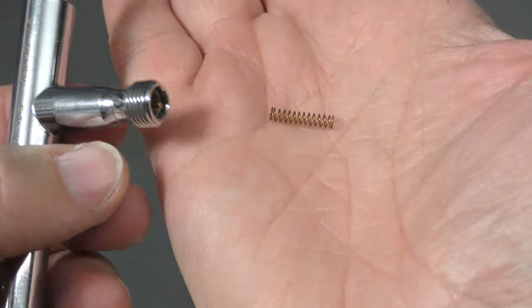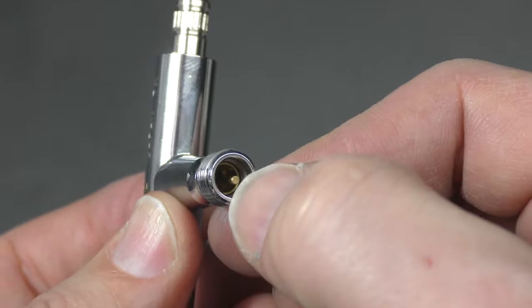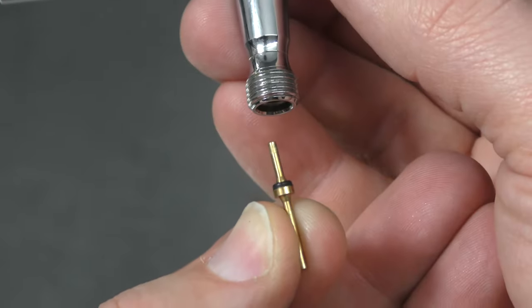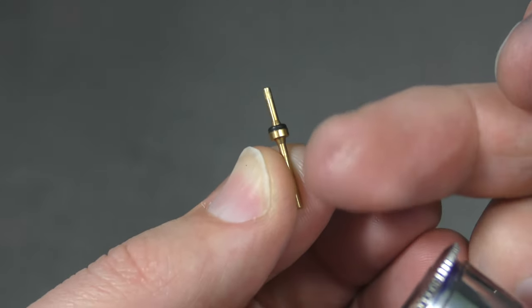Tipping it into my hand, you can see we've got the spring and now we need this part here which is what's just dropped out of the airbrush and it fits back into your airbrush that way with the spring on that lower section.